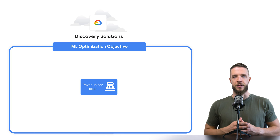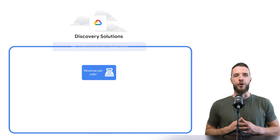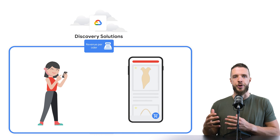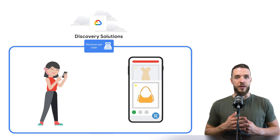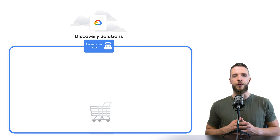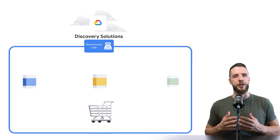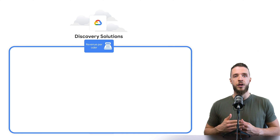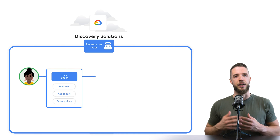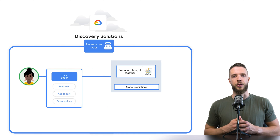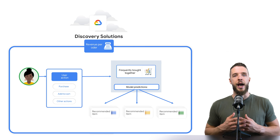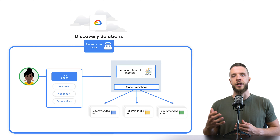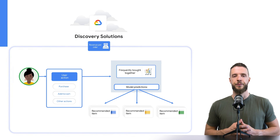Revenue per visit: optimizing for revenue aims for products that users usually purchase together. It is the default only for the Frequently Bought Together recommendation model, which is useful when the user has already added a particular product to a shopping cart and you're looking to recommend complementing items for that product.